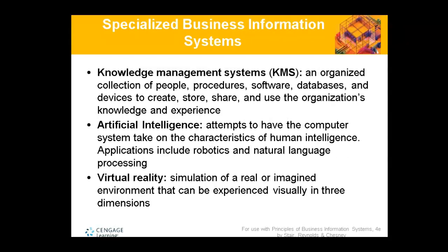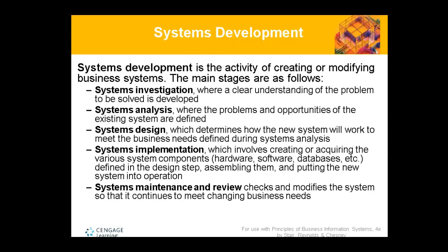Specialized Information Systems include artificial intelligence, virtual reality, knowledge management systems, and online running systems — systems that weren't there a few years ago. Virtual reality, artificial intelligence, and ChatGPT are examples of specialized systems. They are modern, new, and ready to be deployed.